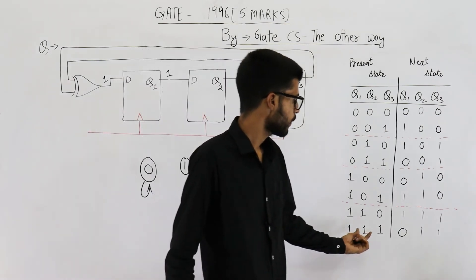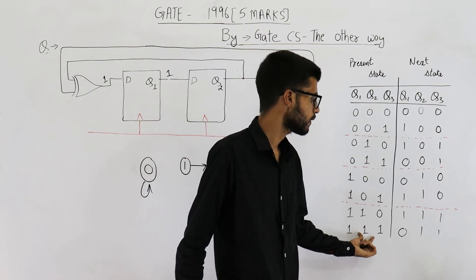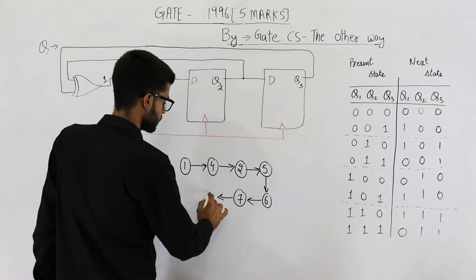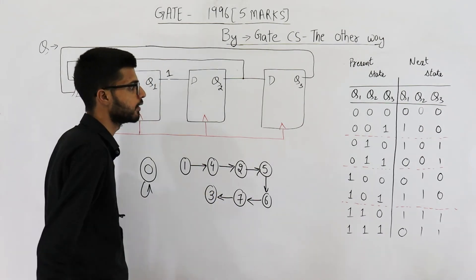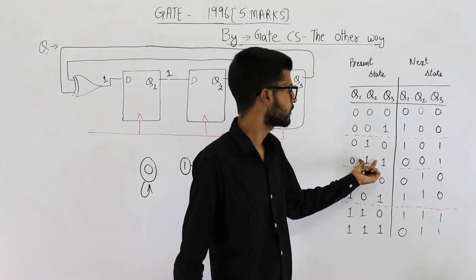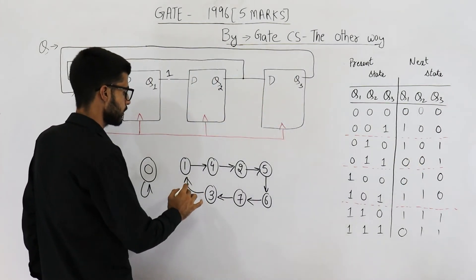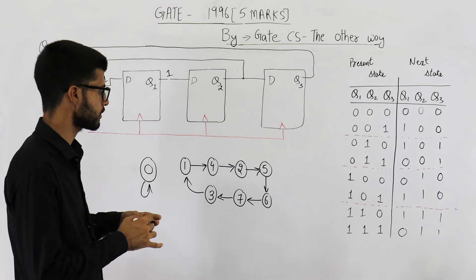And whenever the state is 7, you see a clock signal, you will go to state 3. The next state from here is 3. After 3, you can see the next state is 1. So we'll return back to this state only. This is the counting sequence.